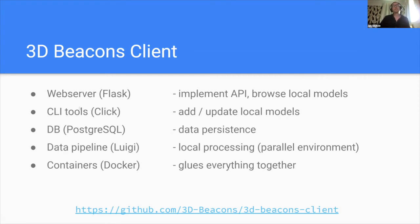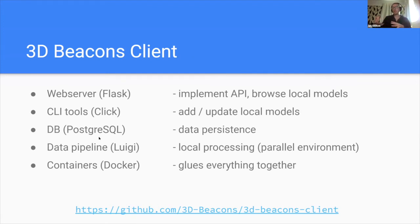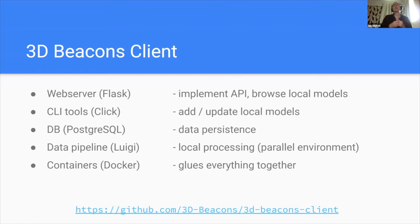In terms of the software stack: there is a web server implementing the API and allowing local model browsing; a CLI integration for maintaining the database and ingesting PDB files from the command line; a local database for data persistence; and a pipeline for local processing such as calculating the Q-mean score. Since Q-mean calculation requires computation at scale, the pipeline supports parallel processing. Everything is packaged with Docker containers — you download the software, download data libraries, update a single configuration file, and run the Docker instance.